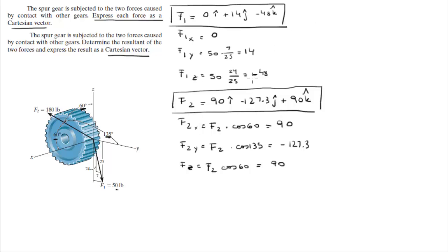Our second problem, all you got to do is add them together. x with the x, y with the y, z with the z, and you're going to get that it's 90i minus 113.3j minus 42k.